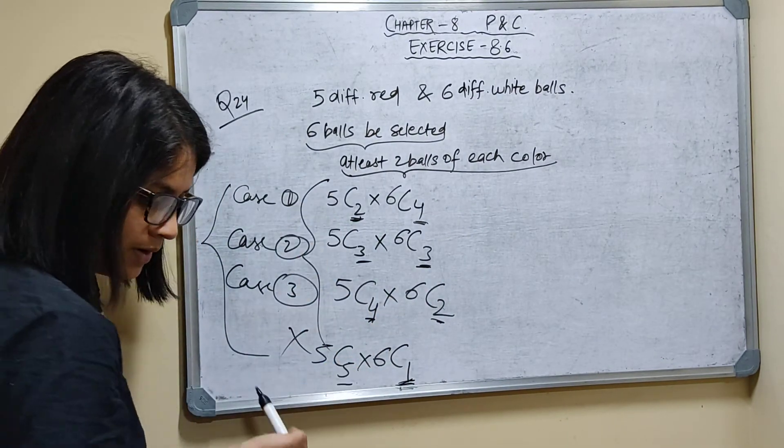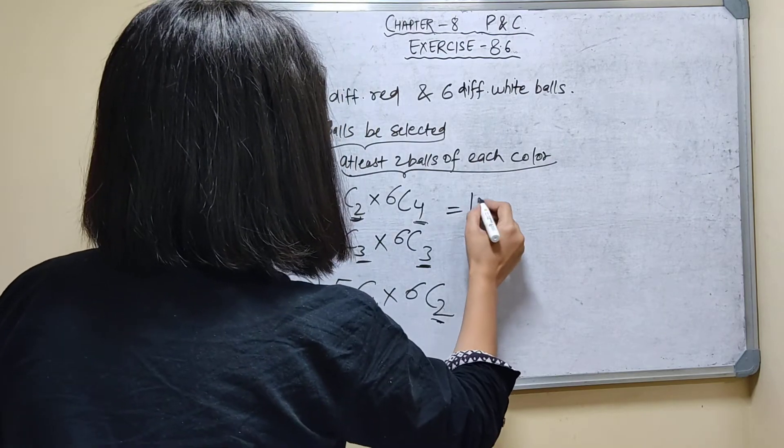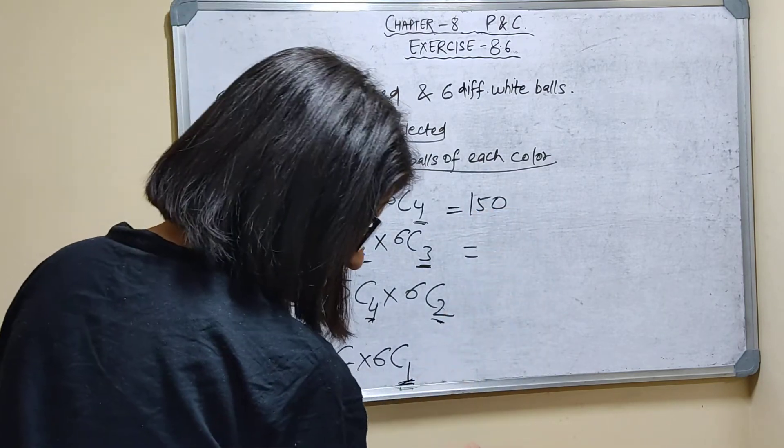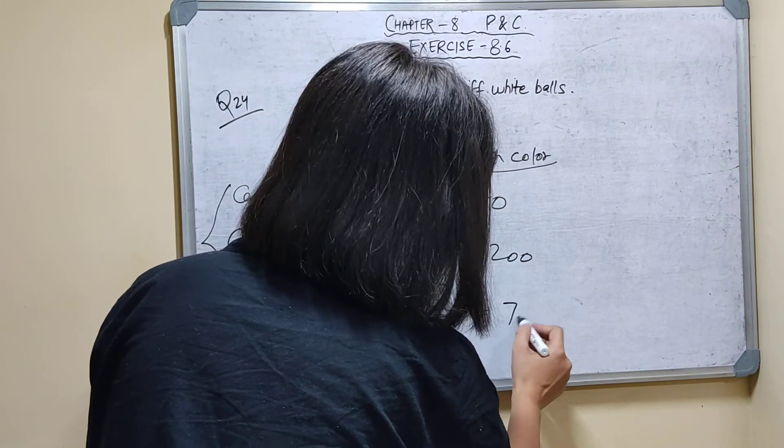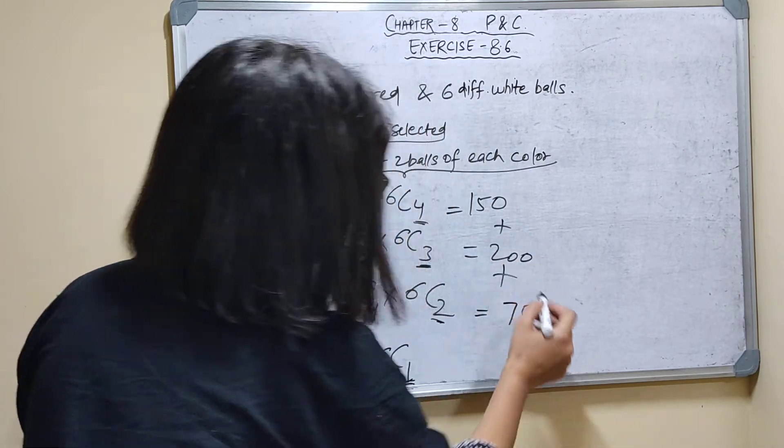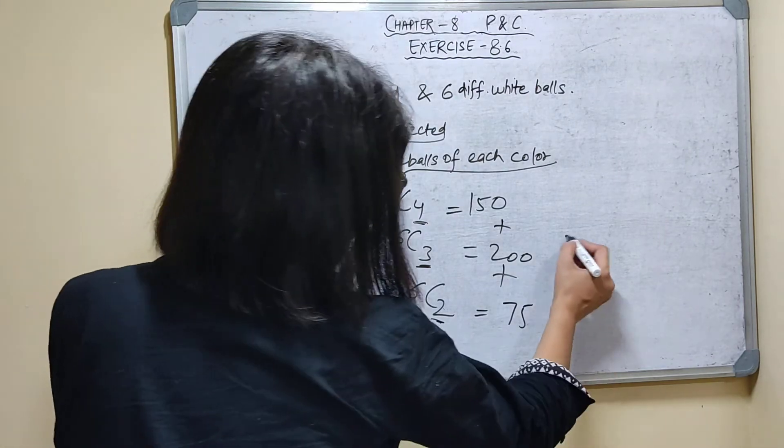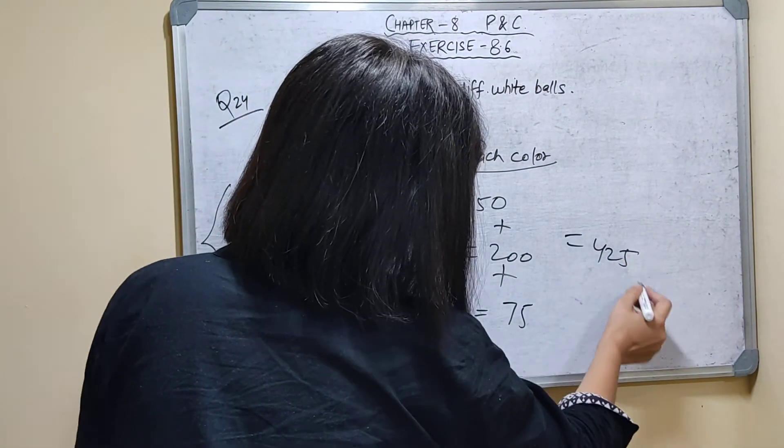These 3 cases give us: this one equals 150, this one equals 200, and this one equals 75. Adding all these together, we get 425 ways.